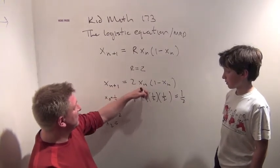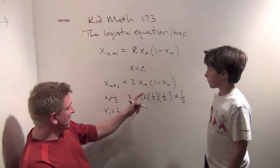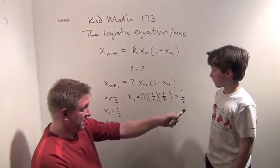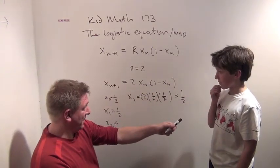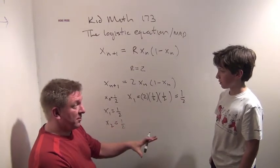x2 is going to be 2 times x1 times 1 minus x1, which is 2 times a half times 1 minus a half, which is a half. It's still going to be a half. It didn't change from what we were doing before.